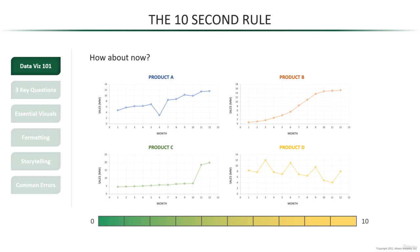Alright, how was it now? Much easier, right? In 10 seconds, not only are we able to tell that we're looking at sales for four different products, but we can identify very clear patterns and trends in each one, which is incredible and really goes to show just how effective data visualization can be.